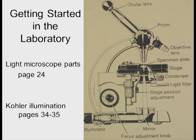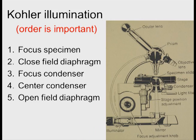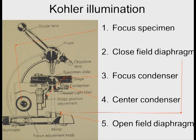Now getting started with microscopy, remember about Köhler illumination. There are five basic steps in Köhler illumination. The first thing you do is focus the specimen. Then you close the field diaphragm. Then you focus the condenser. You center the condenser. And then you open the field diaphragm again. So those are the different components of it.